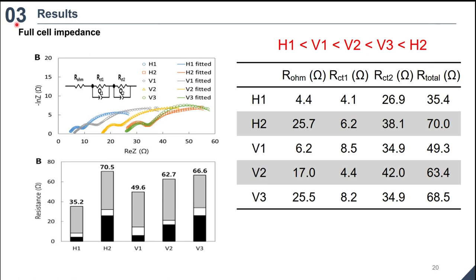Total resistance in average were lowest in H1, followed by V1, V2, V3 and H2. By merely changing anode configuration, full cell ohmic resistance and charge transfer resistance were decreased by 82 percent and 49 percent, respectively. This result showed ohmic resistance and charge transfer resistance of the full cell were closely correlated with the distance from anode to the cathode.